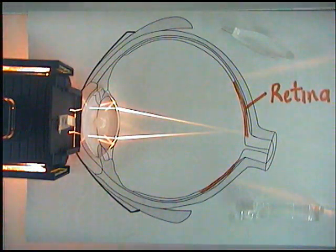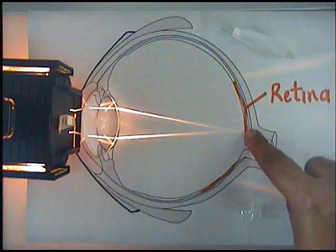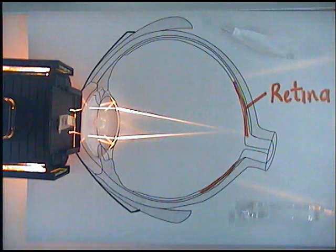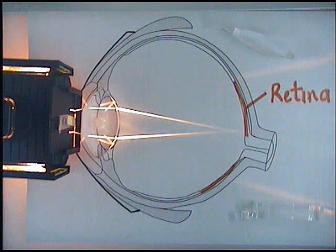If you turn on the light source, you should be able to see that the lens is focusing the light onto a point on the retina. The information is sent from the retina to the brain.